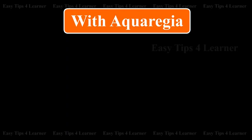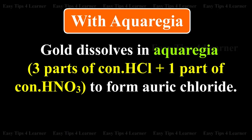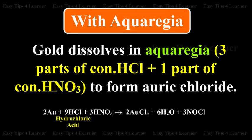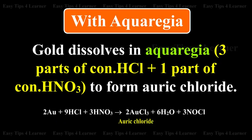With aqua regia: Gold dissolves in aqua regia — i.e., 3 parts of concentrated hydrochloric acid plus one part of concentrated nitric acid — to form auric chloride. The reaction is: Gold + hydrochloric acid + nitric acid gives auric chloride + nitrosyl chloride.